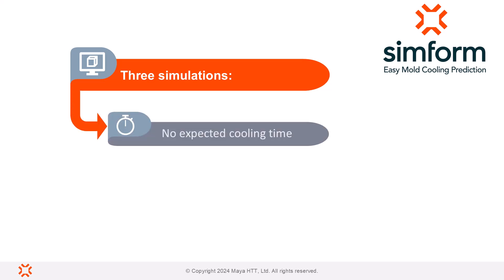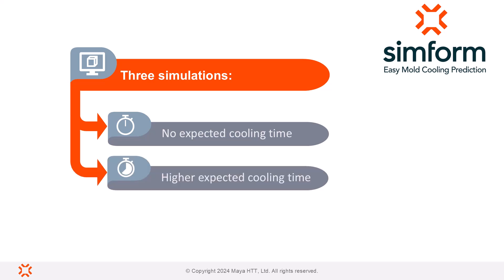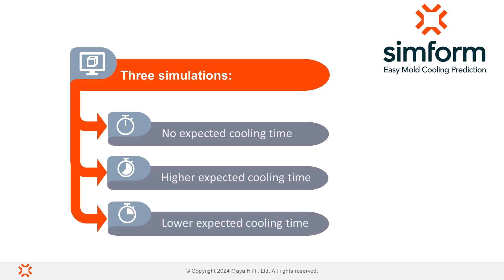The first simulation will have no defined expected cooling time. The second will have an expected cooling time that exceeds the estimated cooling time, to understand the impact of keeping the part in the mould longer than the minimum estimated by Simform. The third simulation will have an expected cooling time lower than the estimated cooling time, to test more aggressive manufacturing parameters and understand the impact of ejecting parts earlier to increase production yield and reduce part costs.